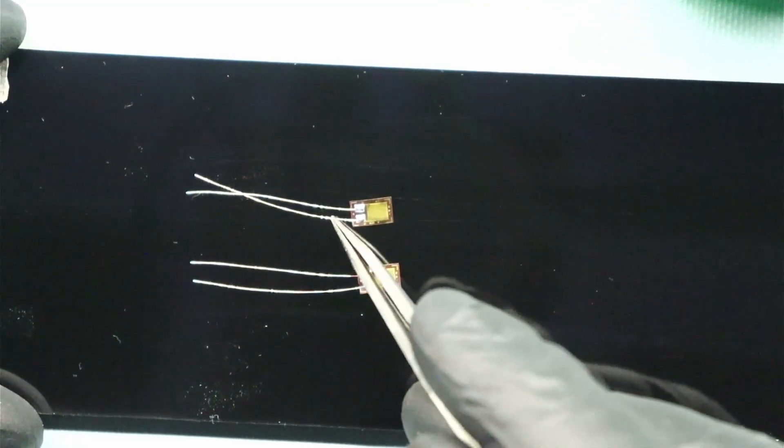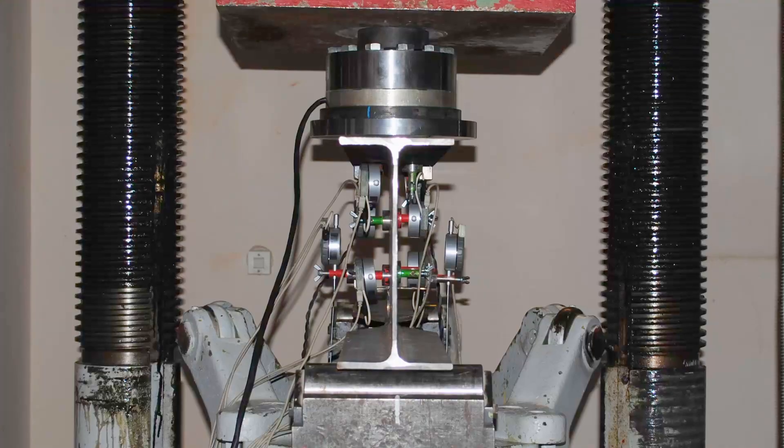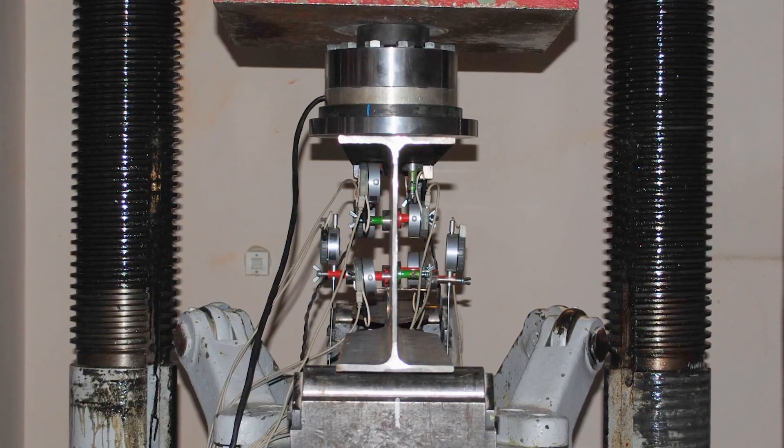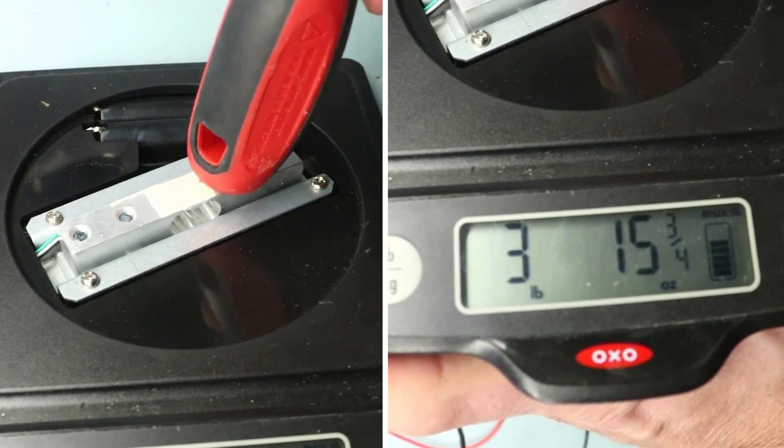Oftentimes, strain gauges are employed as sensors in monitoring stress or strain in some mechanical component or system, which could be an I-beam as part of a bridge, a torque force sensor, or attached to a load cell inside of a small scale.